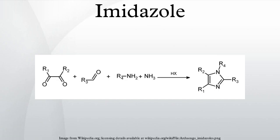Derivatives of imidazole, called imidazoles, form a common family of heterocycles that share the 1,3-C3N2 ring but feature varied substituents. This ring system is present in important biological building blocks, such as histidine and the related hormone histamine. Many drugs contain an imidazole ring, such as antifungal drugs, nitroimidazole, and the sedative midazolam.